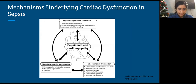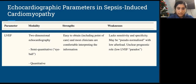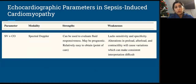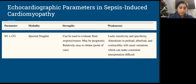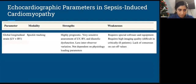Various echocardiographic parameters can be used to characterize sepsis-induced cardiomyopathy. Left ventricular ejection fraction from 2D echo provides quantitative or semi-quantitative assessment and is easy to obtain, but EF alone lacks sensitivity and specificity. Stroke volume and cardiac output derived from LVOT diameter and VTI are load-dependent and can be difficult to interpret. RV dysfunction occurs in up to two-thirds of patients with sepsis-induced cardiomyopathy and may have prognostic value. Global longitudinal strain is more sensitive and specific, and will be discussed further.